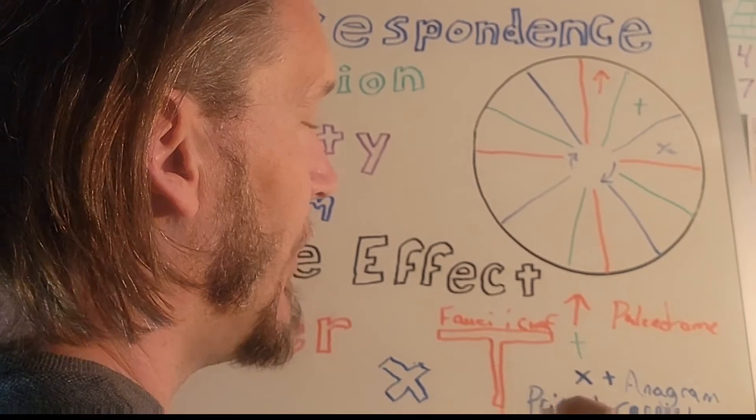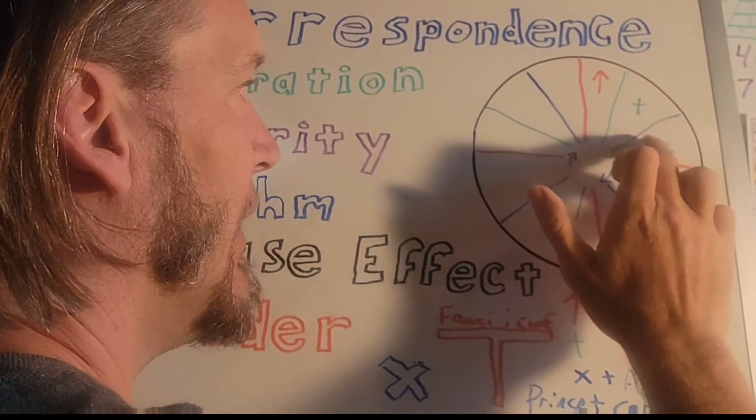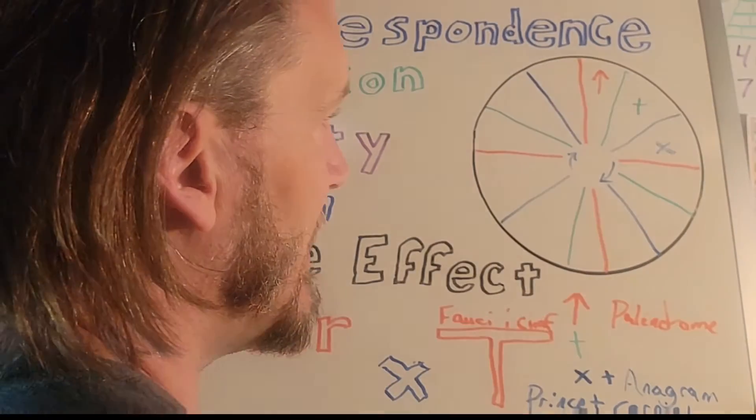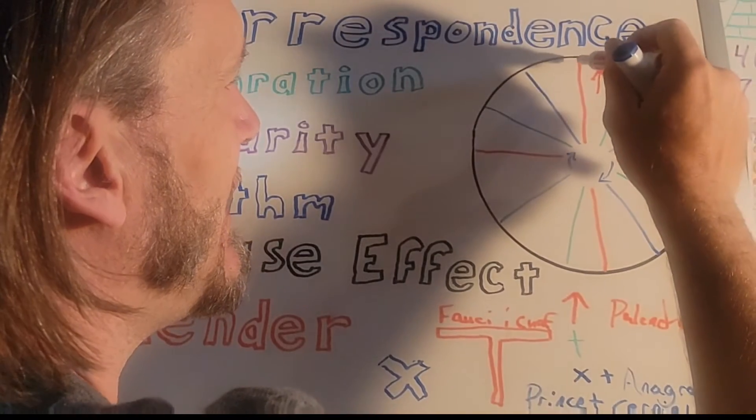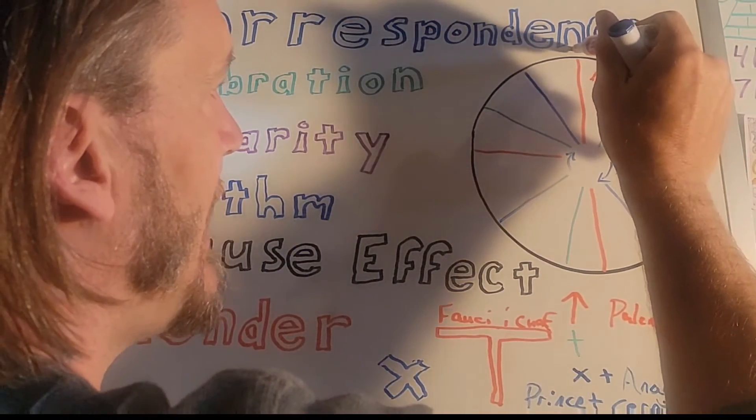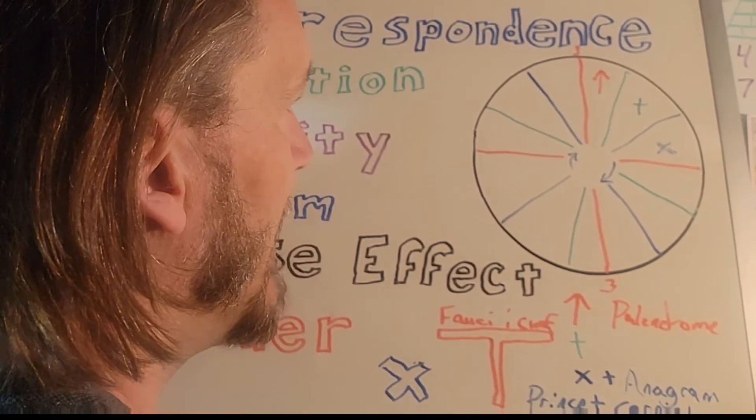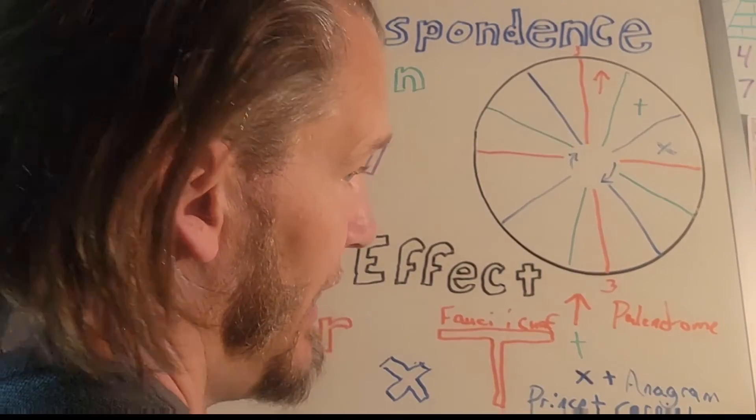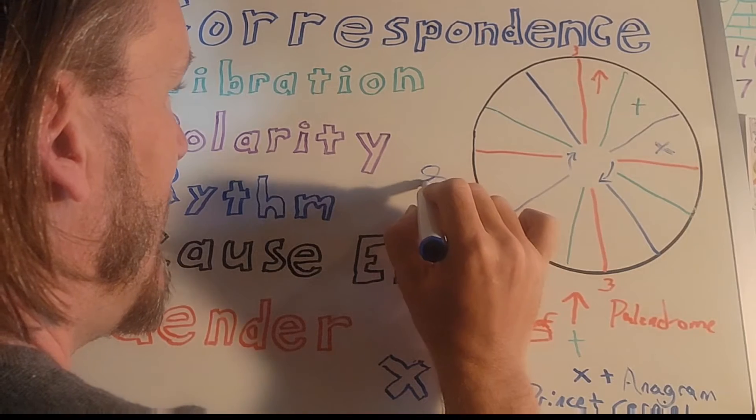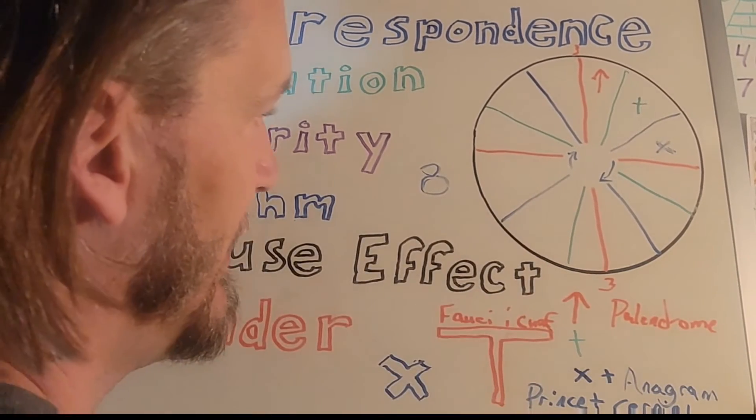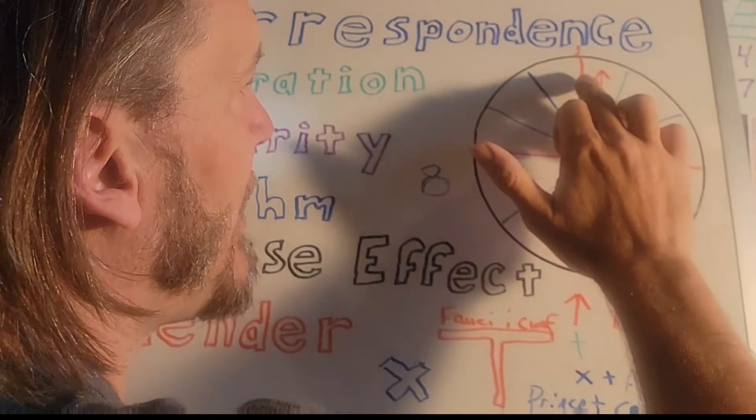So this top line is in the system that I use, the summer solstice. These are the three days that the sun does not progress. Down here is the winter solstice, the three days that the sun does not progress up or down on the analemma. Here you can see a 3-3 encoded. And when you put the 3 and 3 together you get the analemma.